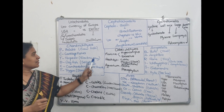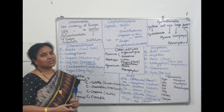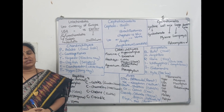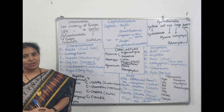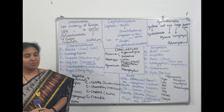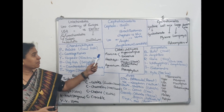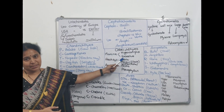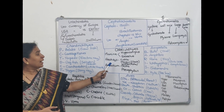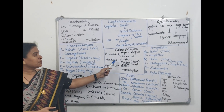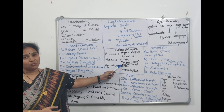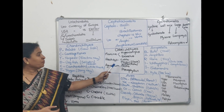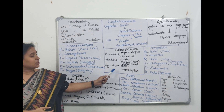Now coming to Osteichthyes — bony fishes. I don't have any code for these; we'll just remember the examples. Marine fishes: Hippocampus and Exocoetus. Under freshwater fishes: Catla, Magur, and Labeo. Aquarium fishes: Betta and Pterophyllum.